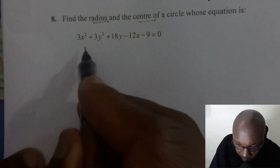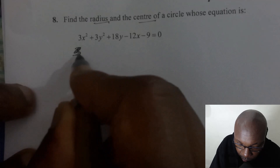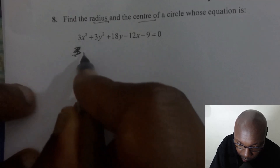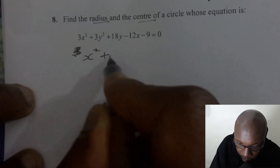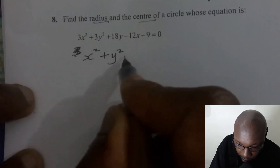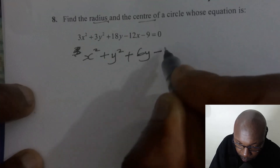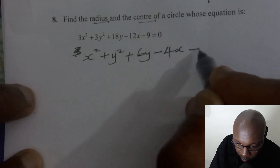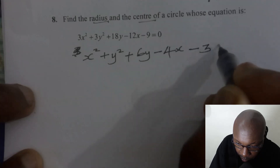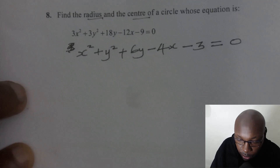So if you divide each term by 3, this is what you're going to have. When you divide by 3, you'll get x squared, then y squared, then 6y, then negative 4x, then negative 3 equals 0. So that is what you get.